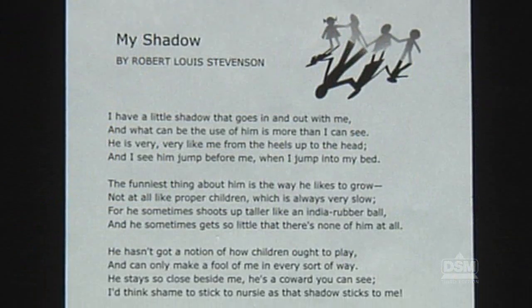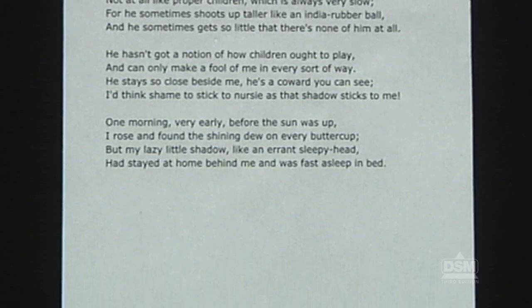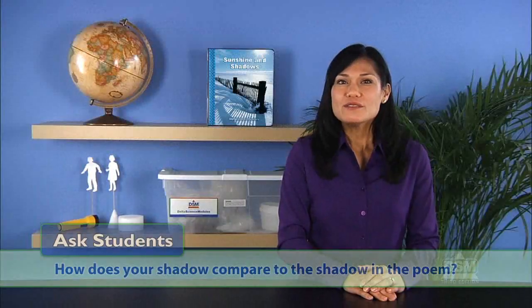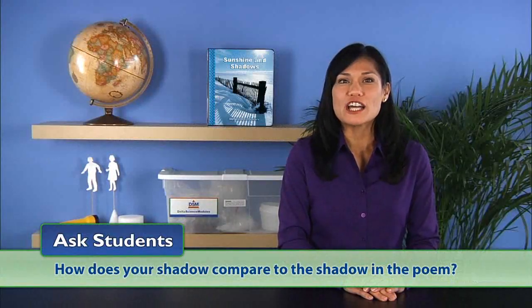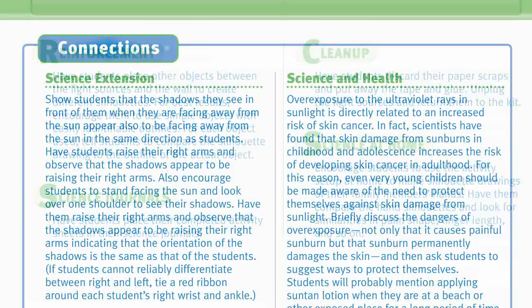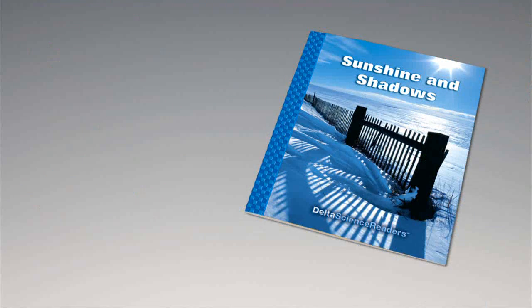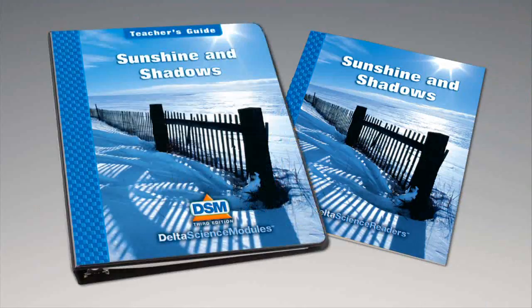Finally, read the class Robert Louis Stevenson's poem 'My Shadow' from 'A Child's Garden of Verses' or other poetry collection. Ask students, 'How does your shadow compare to the shadow in the poem?' Allow students plenty of time to react to the poem, and guide them to understand that their shadows move with them. For science background, reinforcement activities, curriculum connections, and information about the Delta Science Reader, please consult your DSM teacher's guide.